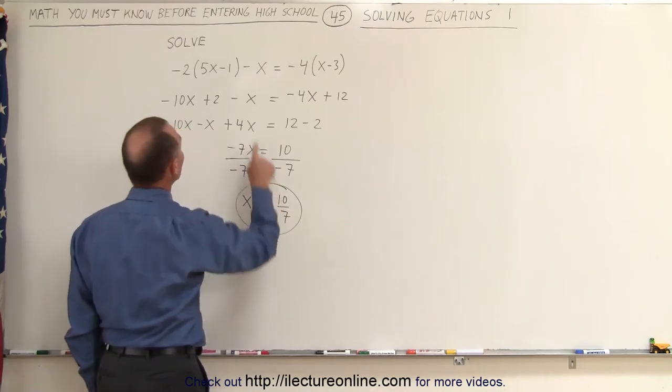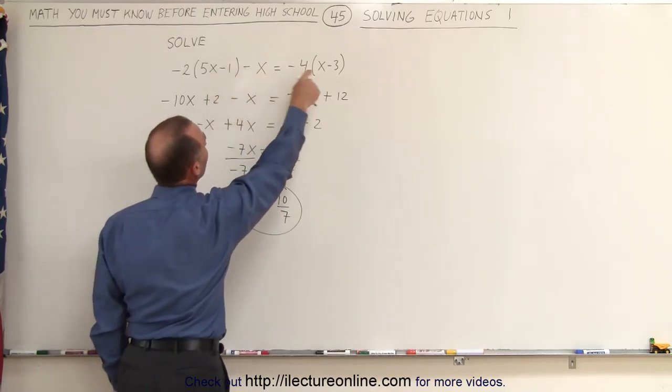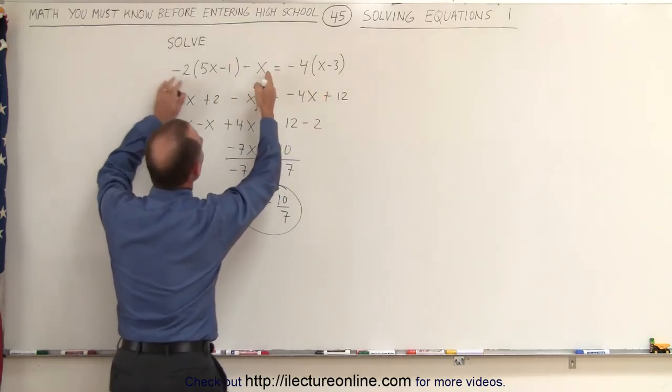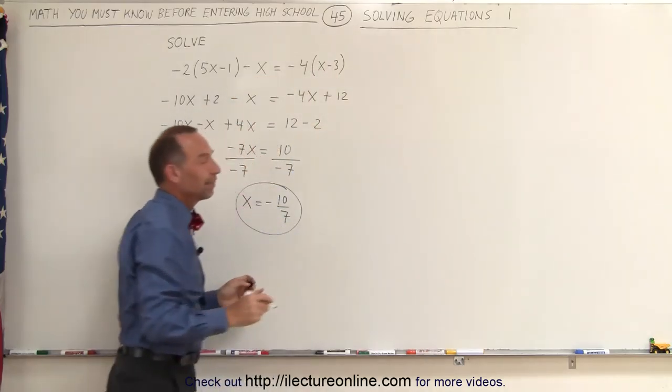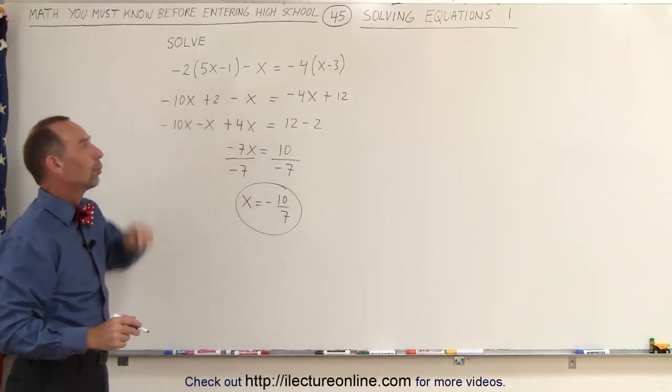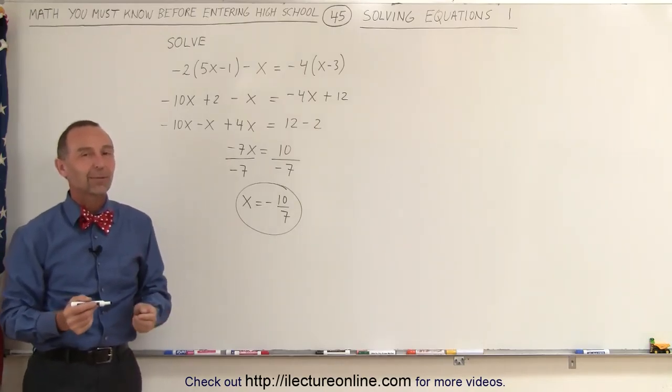When we plug in minus 10 sevenths into x here, here, and here, the left side equation will equal the right side equation. And therefore, that is the solution to the original equation. And that's how it's done.